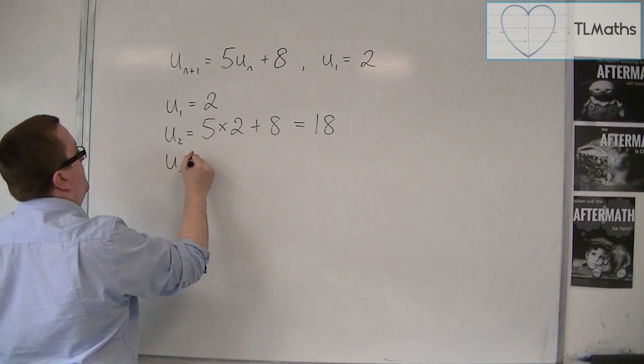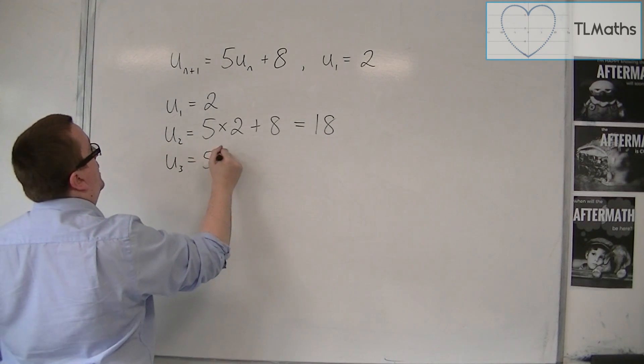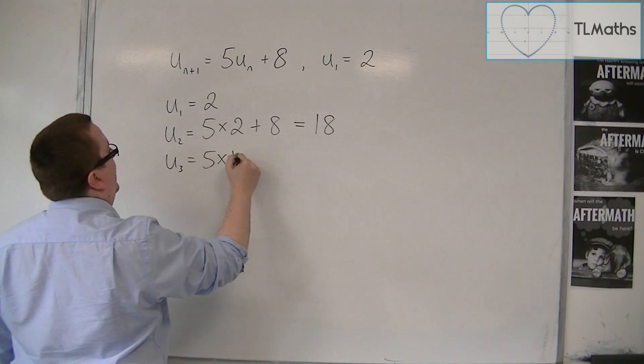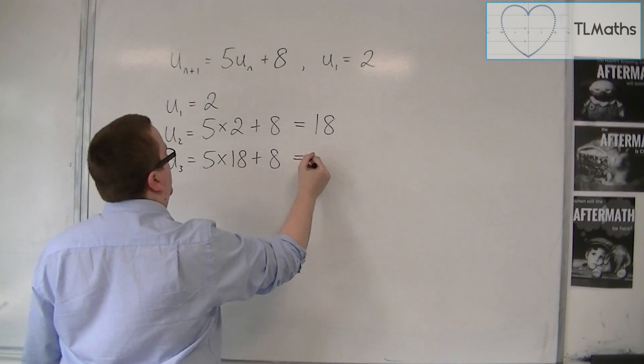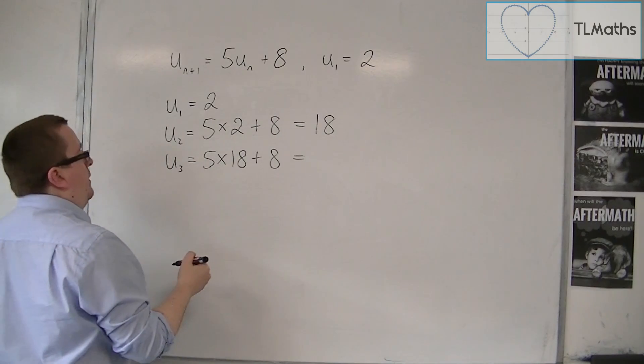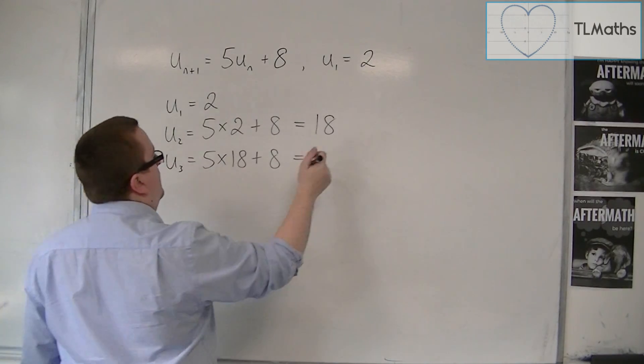u3 is 5 lots of 18 plus 8, so that's 98.